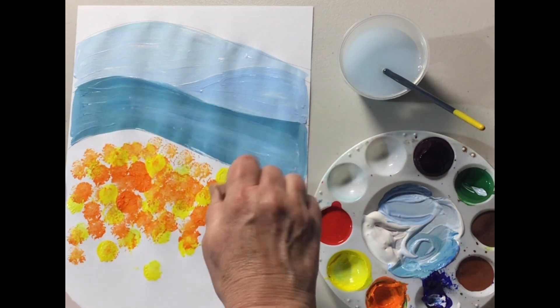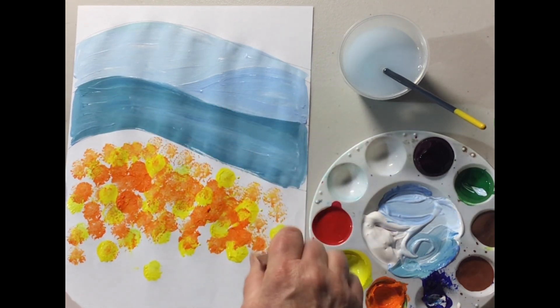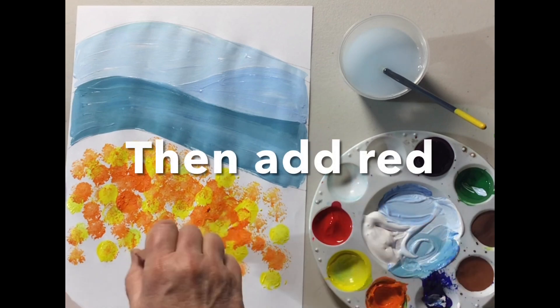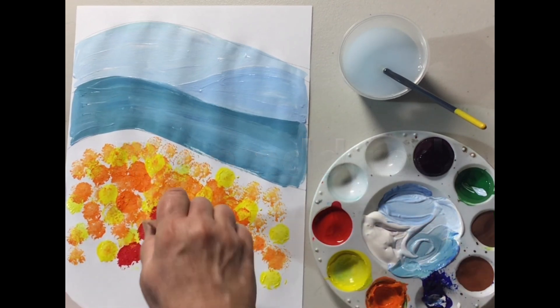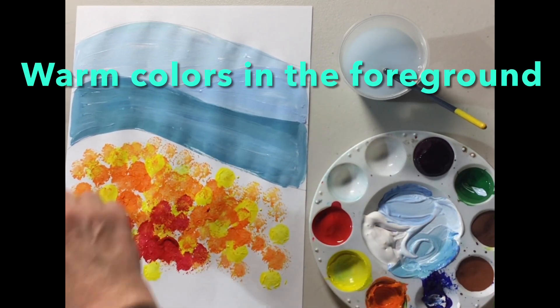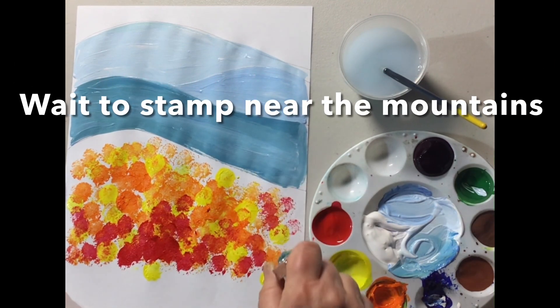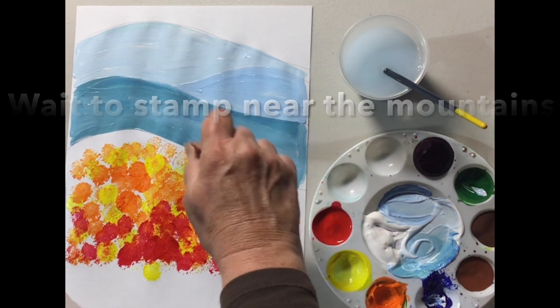I haven't touched the blue yet because that might mix and I'm not ready for that. I'm going to let it dry as I stamp. Let's add red. Red, yellow, and orange are warm colors and they're in the foreground.